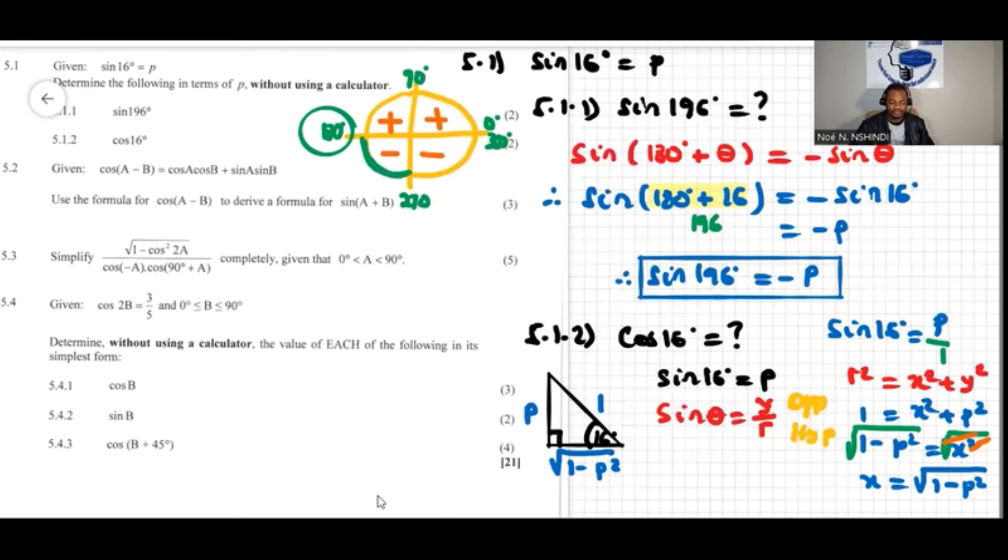Then because I'm looking for cos of 16 degrees, it is said that cos of theta is adjacent over hypotenuse. The idea was to find first all the sides of the triangle, then we can start answering this question.